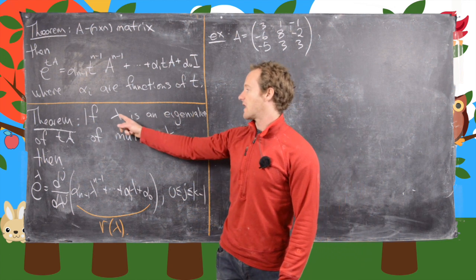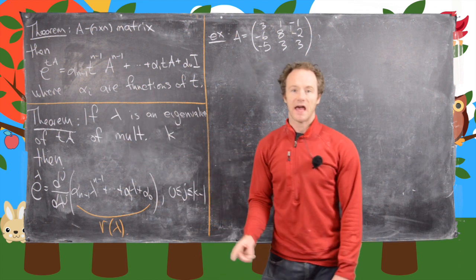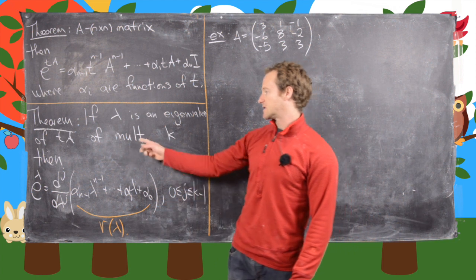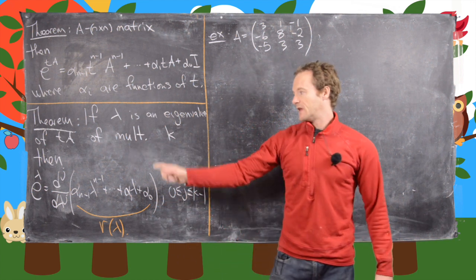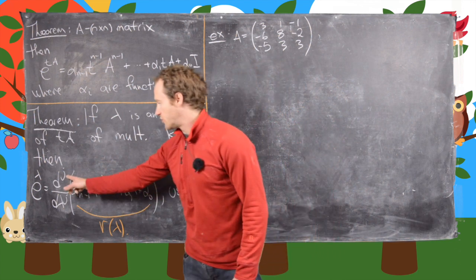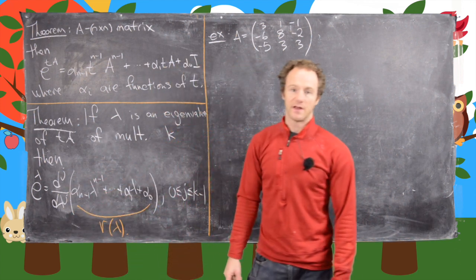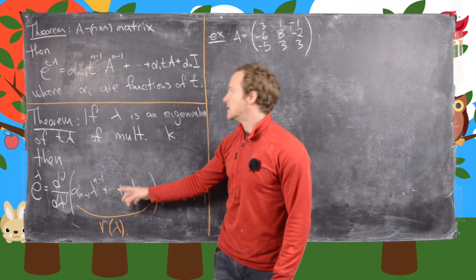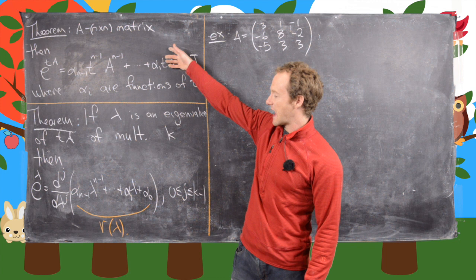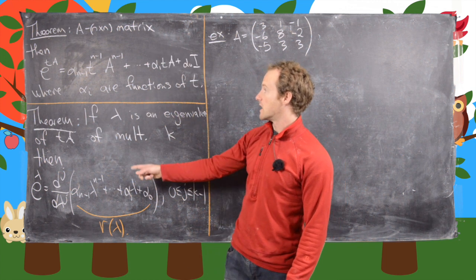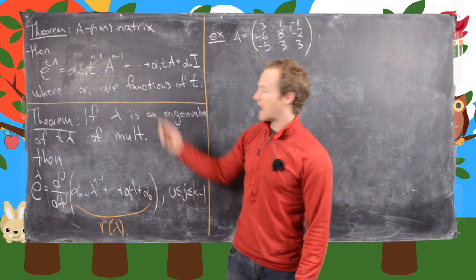And then if lambda is an eigenvalue of tA—and it's important that it's an eigenvalue of tA—and it's of multiplicity k, then e to the lambda is equal to this following thing. So we have the derivative with respect to lambda, the jth derivative of this polynomial we'll call r(theta). So it's kind of the same thing as what we have up here, except we've plugged in lambda for t and the A's are gone.